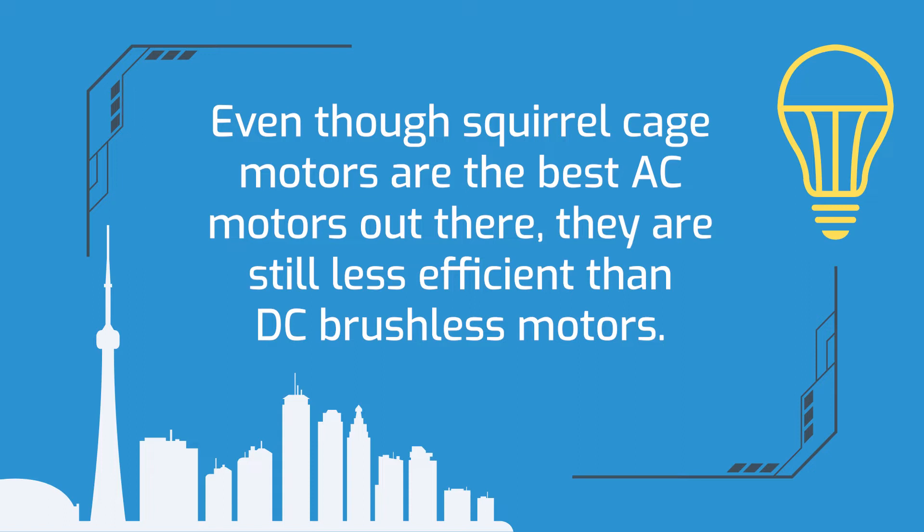Squirrel cage motors and DC brushless motors both require zero maintenance. Squirrel cage motors don't require slip rings, brushes, or commutators, and fewer physical parts generally means less wear, resulting in longer lifetimes. The lack of brushes and commutators is also partly why squirrel cage motors and DC brushless motors are more efficient than DC brushed motors. Even so, squirrel cage motors are still much less efficient than DC brushless motors, largely because all AC motors suffer from reactive power losses, and DC motors do not.